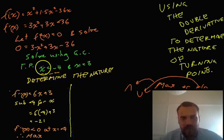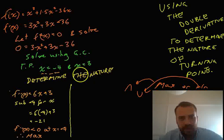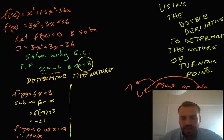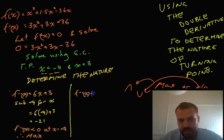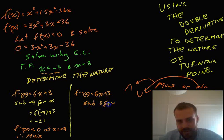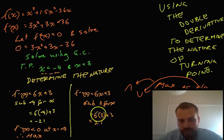Okay, hopefully, you can see what's coming next. We can determine the nature of x equals 3 in the same way. We know that it's a turning point. Let's see if it's a maximum or a minimum. So, we use our second derivative test. Equals 6x plus 3. We sub 3 for x.